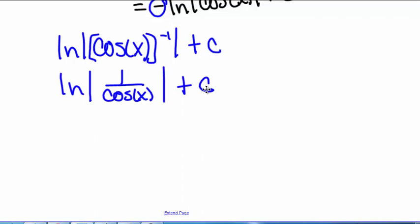So that gives us the natural log of the absolute value of 1 over cosine of x plus our constant c. And 1 over cosine of x can be written as secant of x. So we have the natural log of the absolute value of secant of x plus c is also equal to the integral of tangent of x.